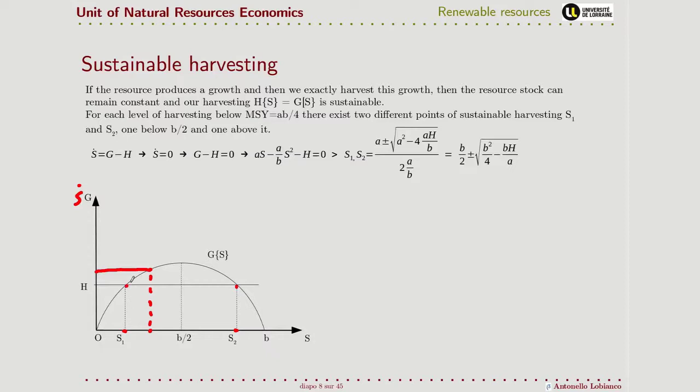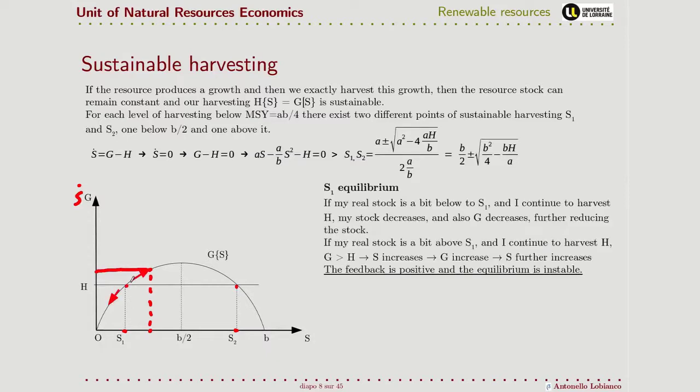As I said, these two equilibriums are not the same, however. Let's see S1. If I am on S1, what happens if my real stock is not S1, but is S1 comma? Okay, I am here, the resource regenerates this amount, but I am harvesting this amount, not this one. So I am harvesting more than what the resource produces. If I continue to harvest the same amount,